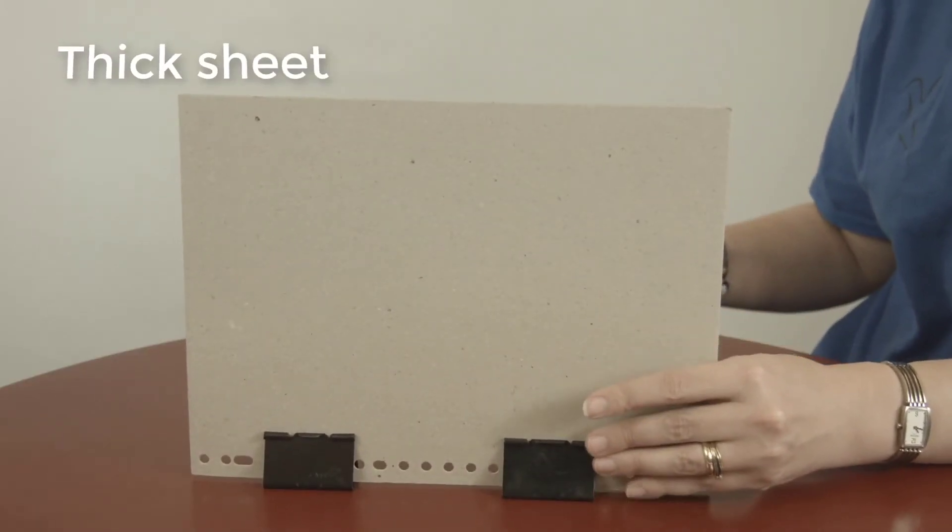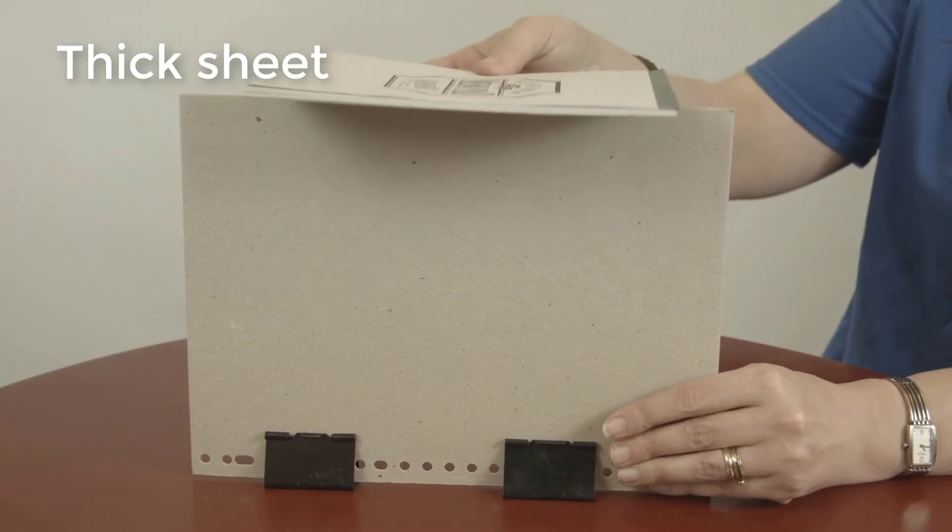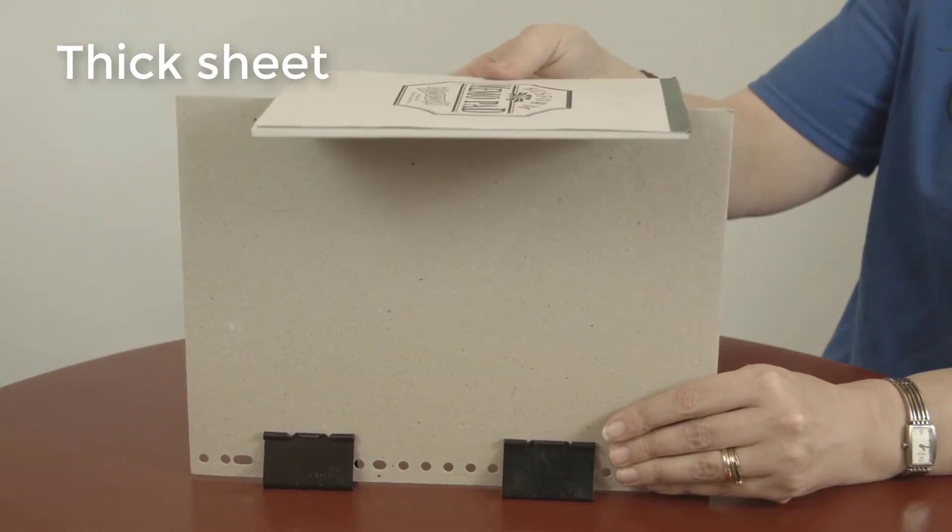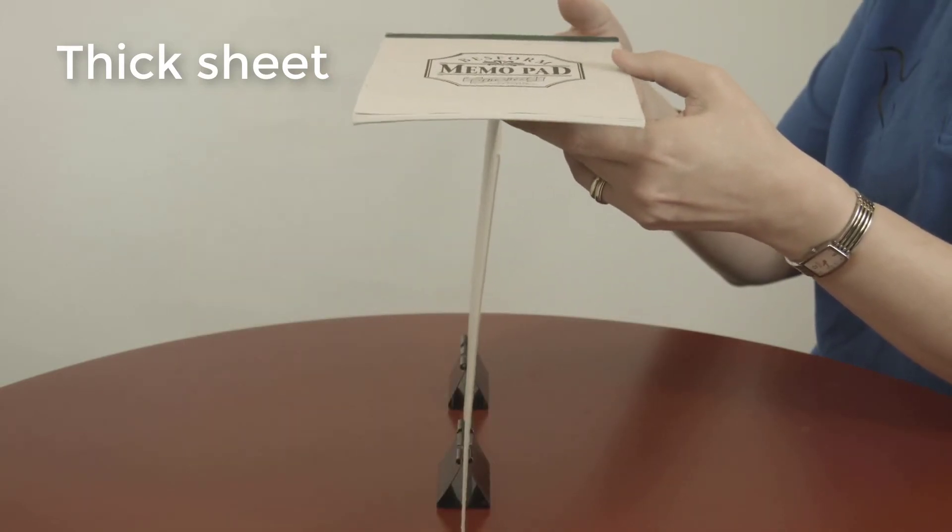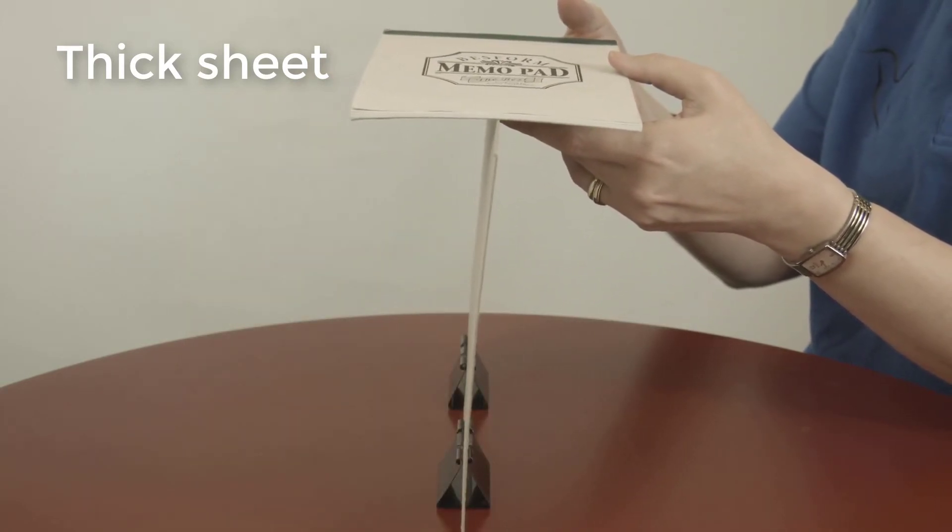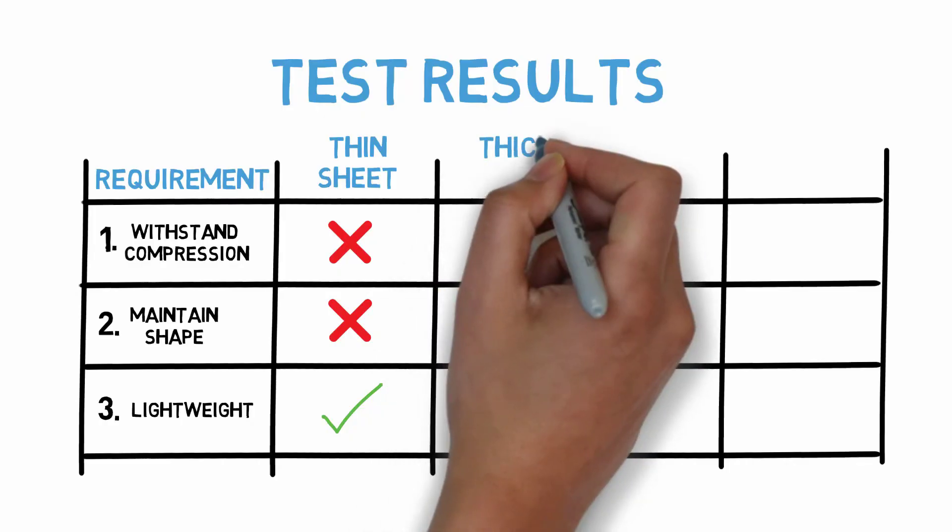What if we try a slightly thicker piece of cardboard? Maybe that would have a different effect. Here we have the back cover of a spiral bound notebook. Once we actually manage to balance the notepad, it looks like we do have a structure that supports the weight and doesn't bend out of shape.